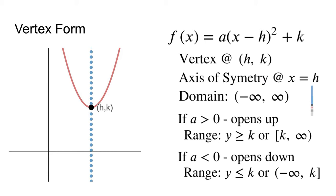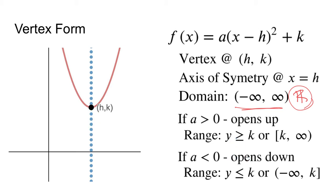The axis of symmetry is at x equals h. The domain is all real numbers — sometimes we write this in interval notation, or you can use the symbol for all real numbers. If it opens up, the range is going to be y greater than or equal to k, k being the lowest y value. And if it opens down, y less than or equal to k.